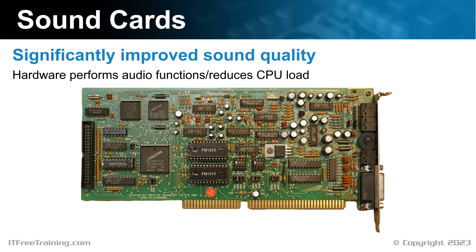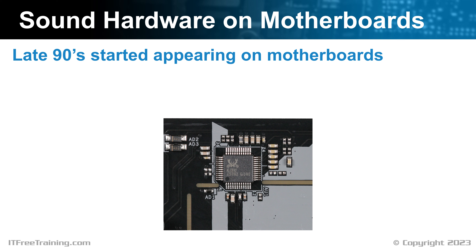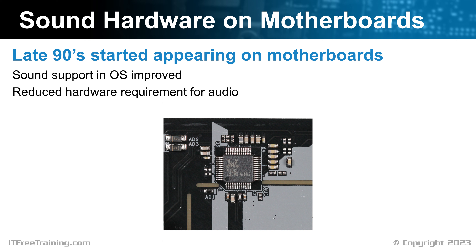In the late 90s, sound chips started being integrated into the motherboard. Sound cards were better than integrated sound chips and offered more features. However, surprisingly, it was not hardware improvements that saw fewer sound cards being purchased. What caused sound cards to decline in favor of integrated sound on the motherboard was improvements in sound support in the operating system. Nowadays, functions like mixing different sounds together and other functions that were performed by hardware on the sound card are now done by the operating system. By doing this, it reduces the hardware requirement for audio. So the hardware on the motherboard for sound does not need to be powerful since the operating system is doing most of the work.